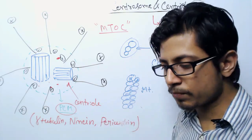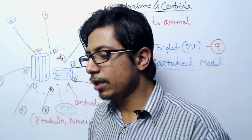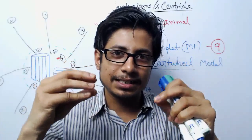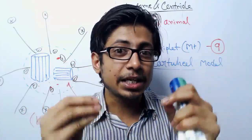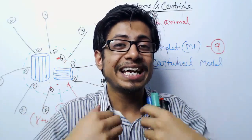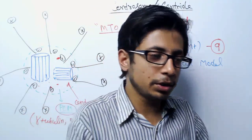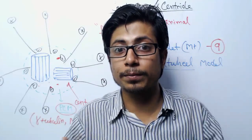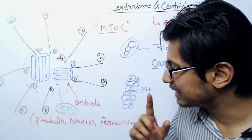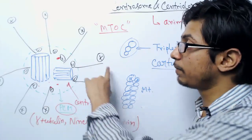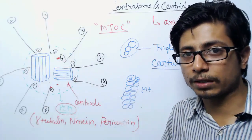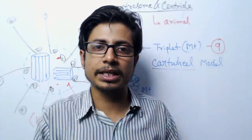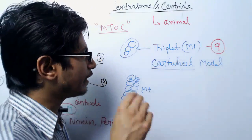The function of centrosomes and centrioles is to produce microtubules. These microtubules interact with the centromere region — the kinetochore region — of chromosomes during cell division. During mitosis, microtubules separate sister chromatids from each other, and the production of those microtubules is controlled by centrosomes.